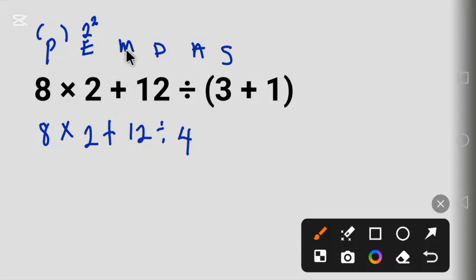And the next one is multiplication and division. They are in the same level of order of priority. Multiplication and division are in the same level.